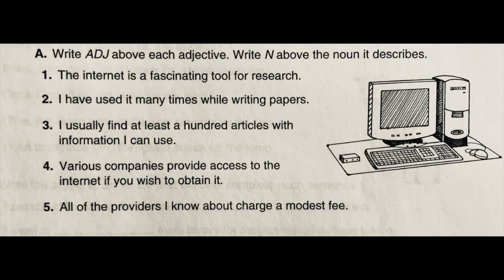Do we have an adjective describing what kind of internet, how many internets, or which internet? No. What about 'research' — any adjective telling what kind, how many, or which? No. Let's look at 'tool.' Do we have an adjective telling what kind of tool? Yes — 'fascinating.' It is a fascinating tool. So you would write ADJ above 'fascinating' and N for noun above 'tool.'